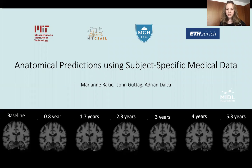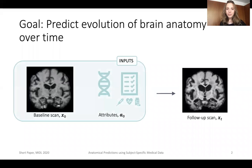Hi. In this short paper, we want to predict the evolution of brain anatomy over time. Imagine that for every subject in a population, you're given a baseline scan and some subject-specific information. With that, we want to predict what the follow-up brain MRI scan is going to look like.